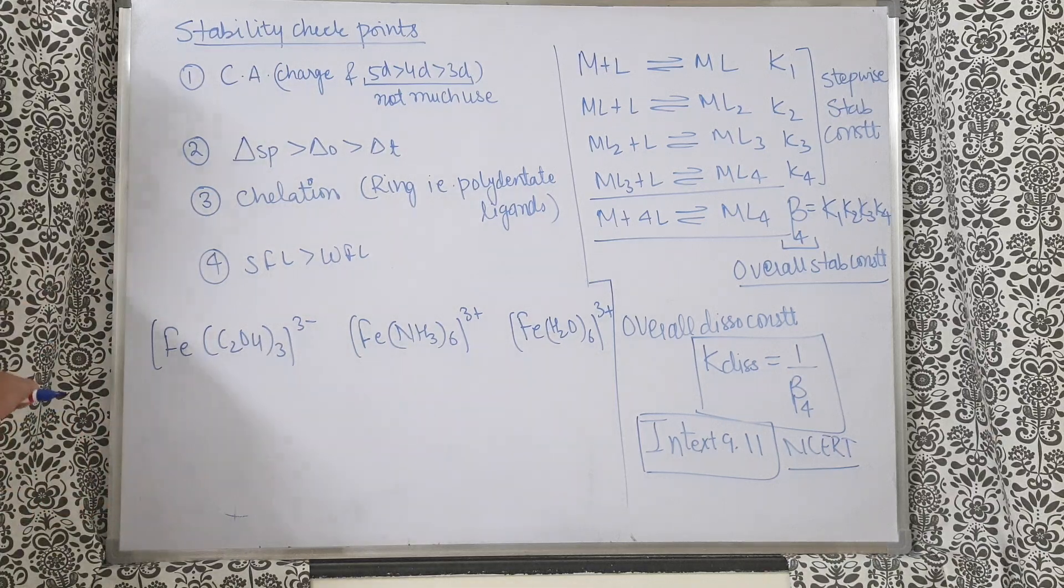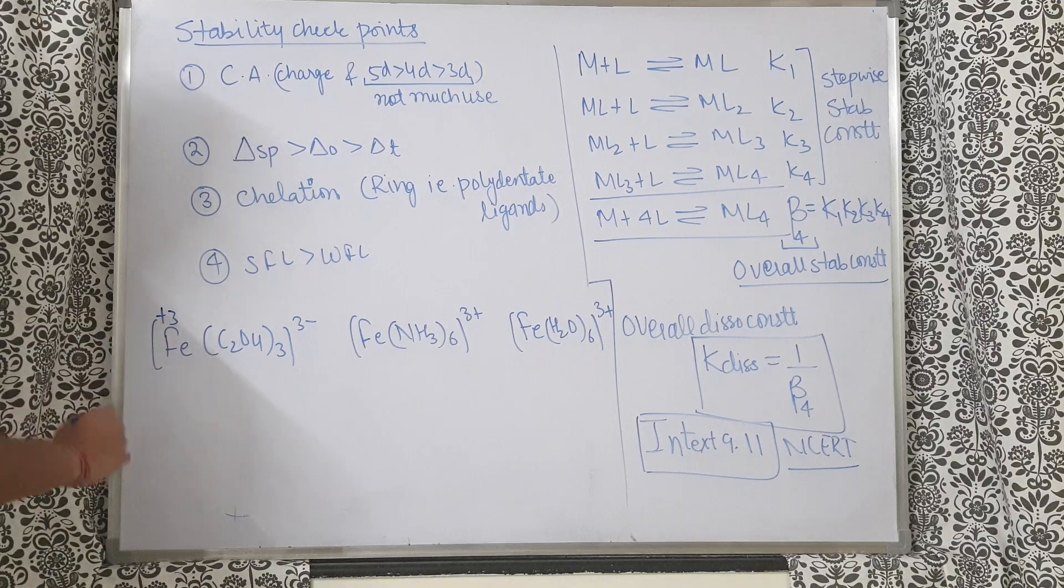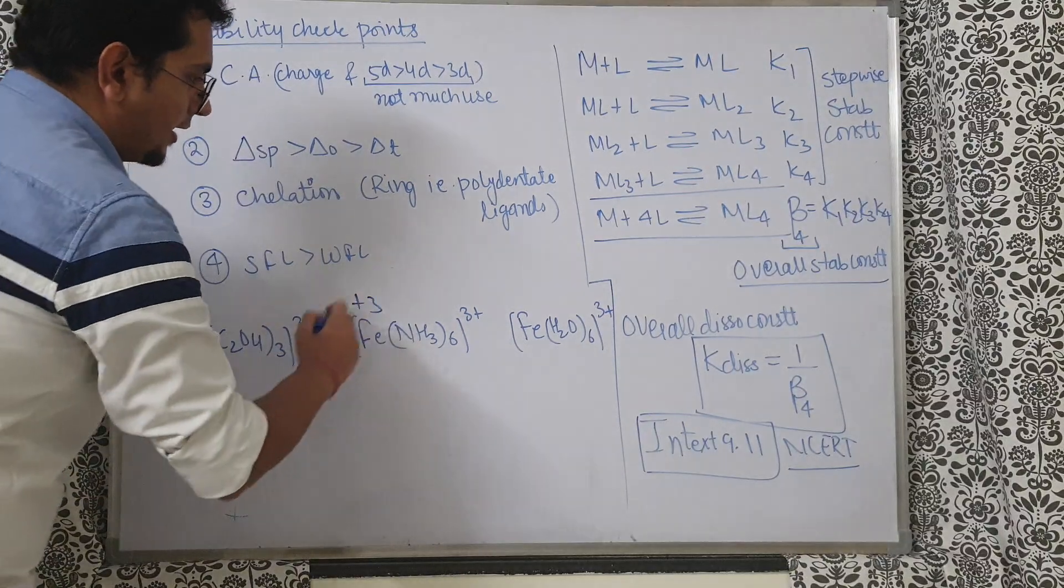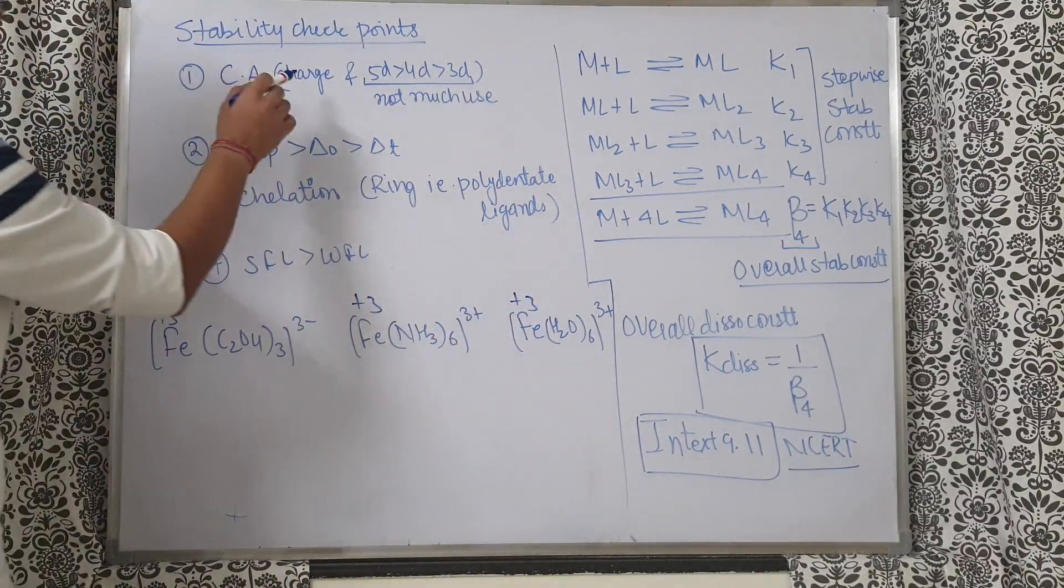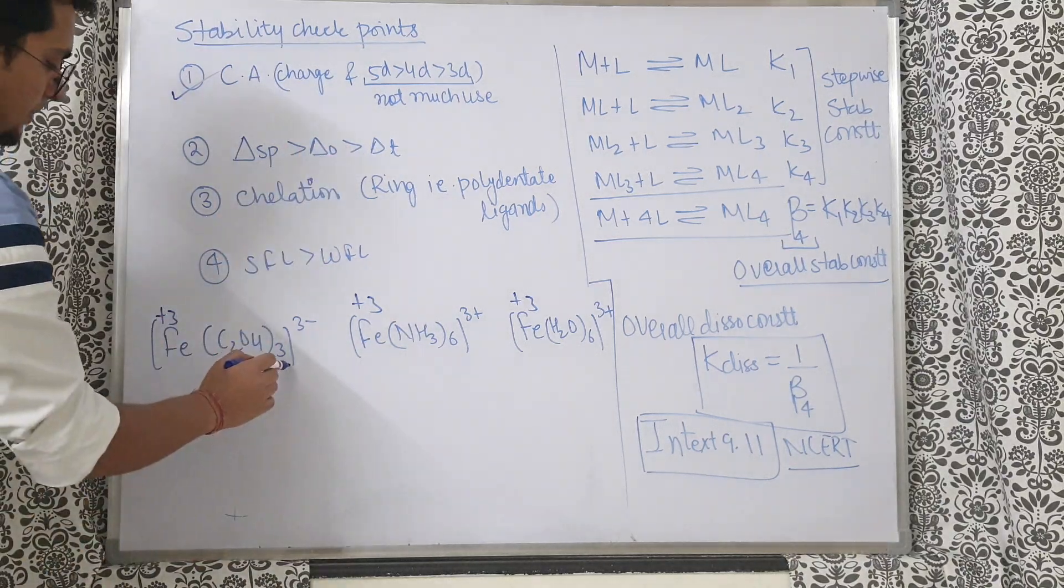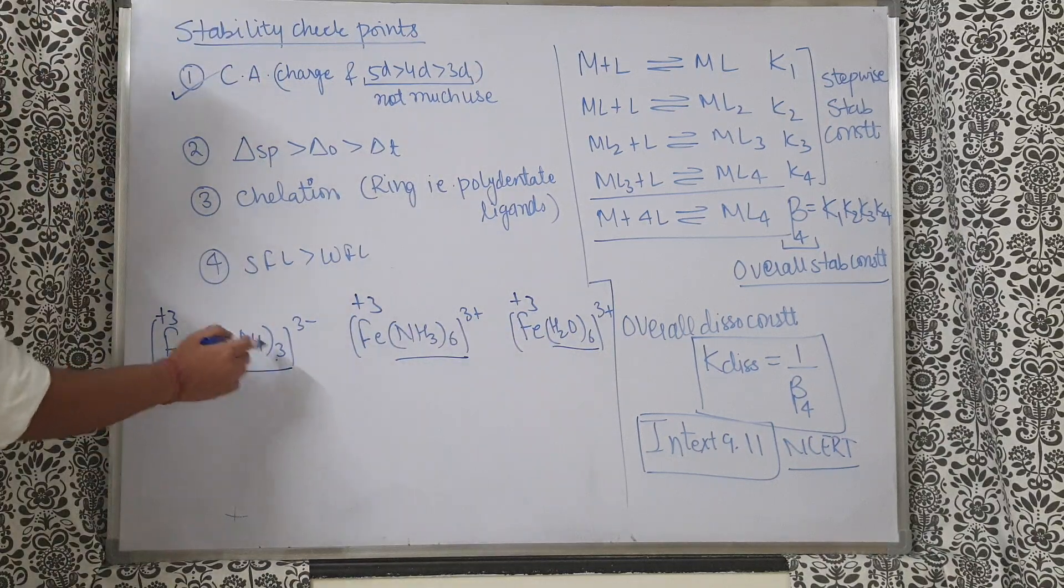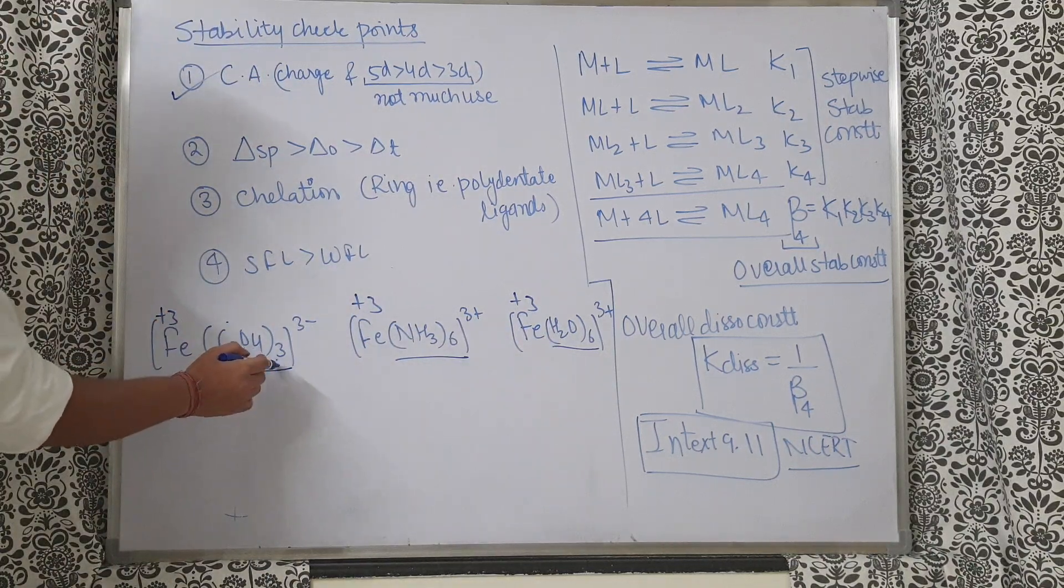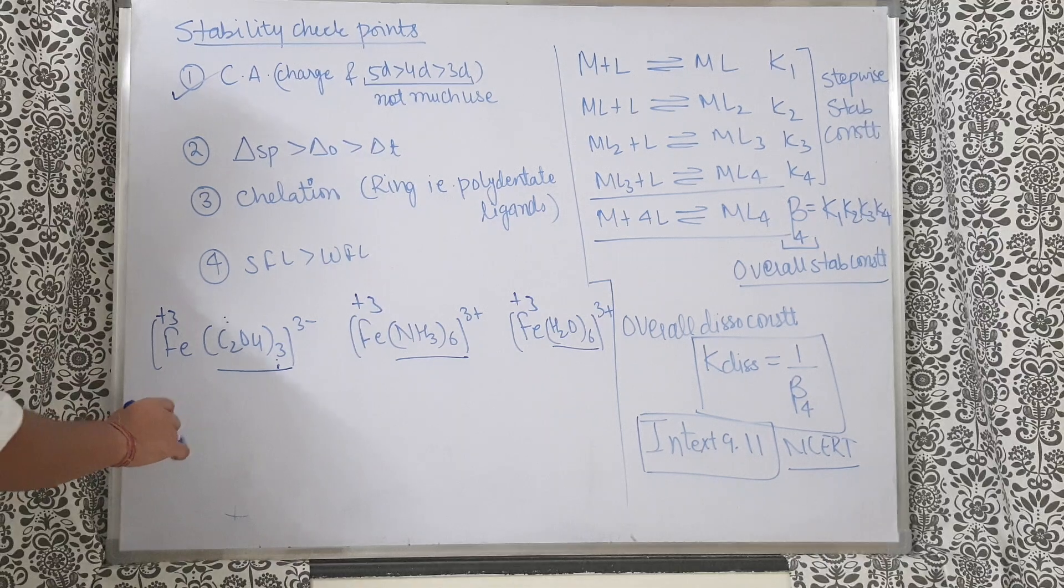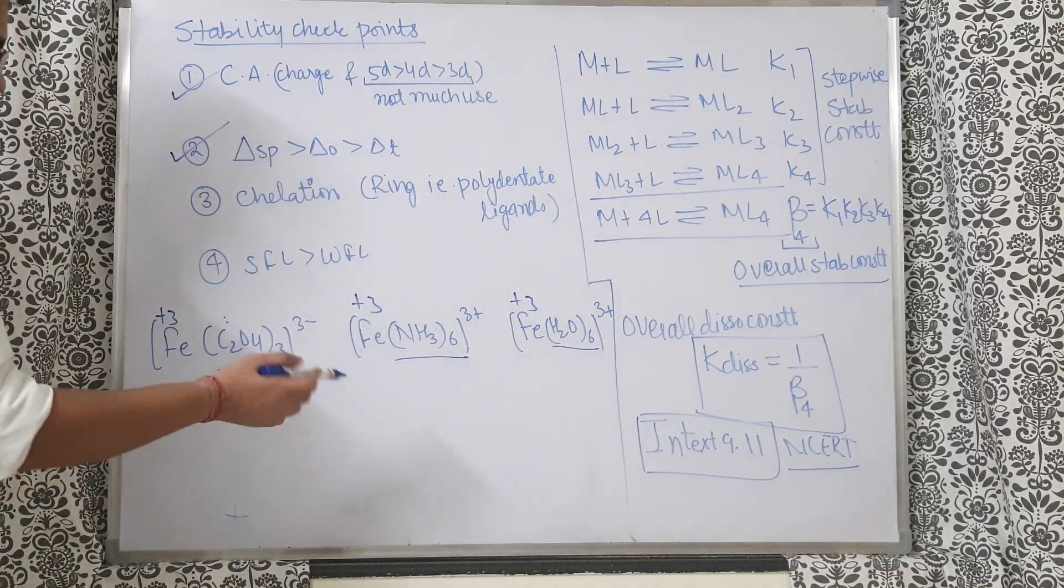SFL/WFL - that means stronger ligand more stable, weaker ligand less stable complex - is checked after chelation. One example I can give: here I will check firstly the central atom charge on central atom. Plus three oxidation state here, here also plus three, here also plus three. So charge is same. Delta o, delta sp - coordination number six. Again here also six, here also six. It is not three. Coordination number here, denticity two, three ligands, three into two is six. So all are octahedral.